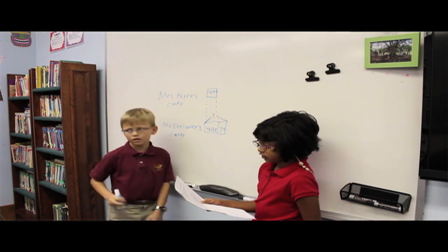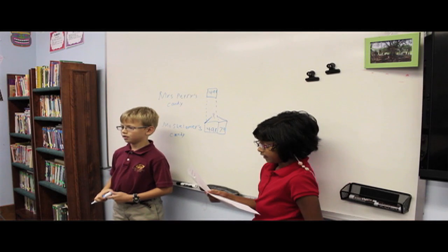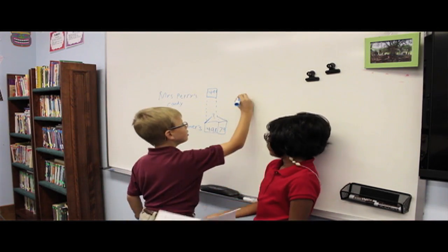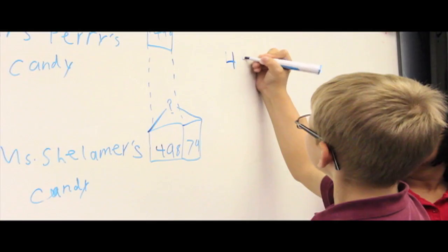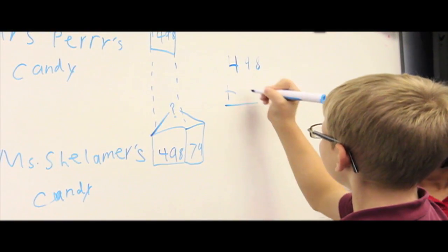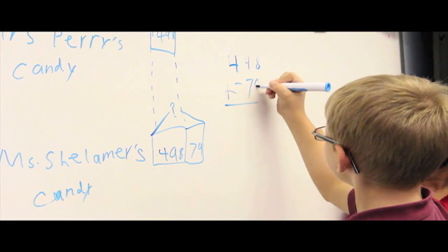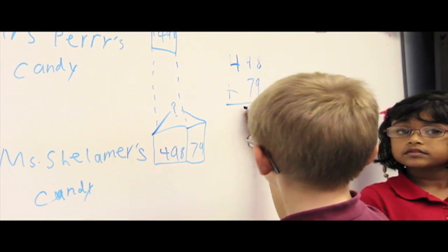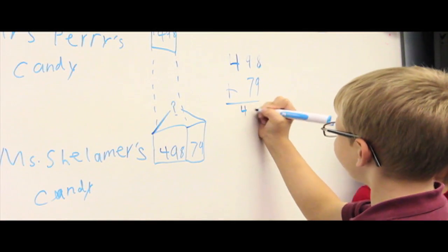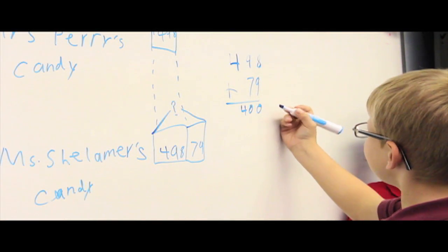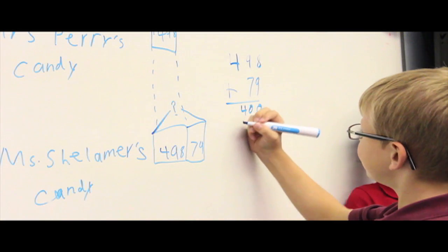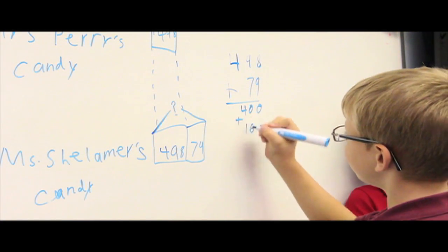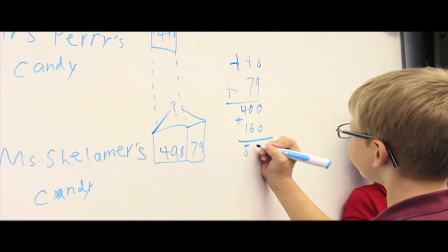Then we do the computation using the left to right. From 498 plus 79. 4 hundreds plus 0 hundreds is 4 hundreds. Value 400. 9 tenths plus 7 tenths is 16 tenths. Value 160. Mental math 560.